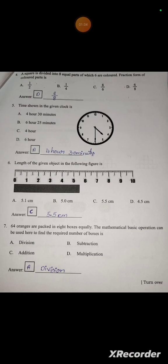A square is divided into 8 equal parts of which 6 are colored. Fraction form of the colored part is? So the square is divided into 8 equal parts, the denominator is 8. How many parts are colored? 6 are colored. So the answer will be 6 by 8.